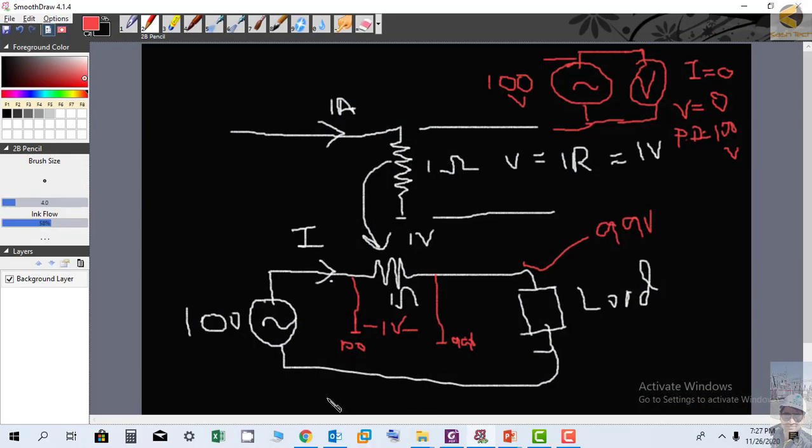Here you can see the applied voltage through the source is equal to 100 volts. The supplied voltage or the source voltage is 100 volts. We can say that the source connected to supply the load is 100 volts.